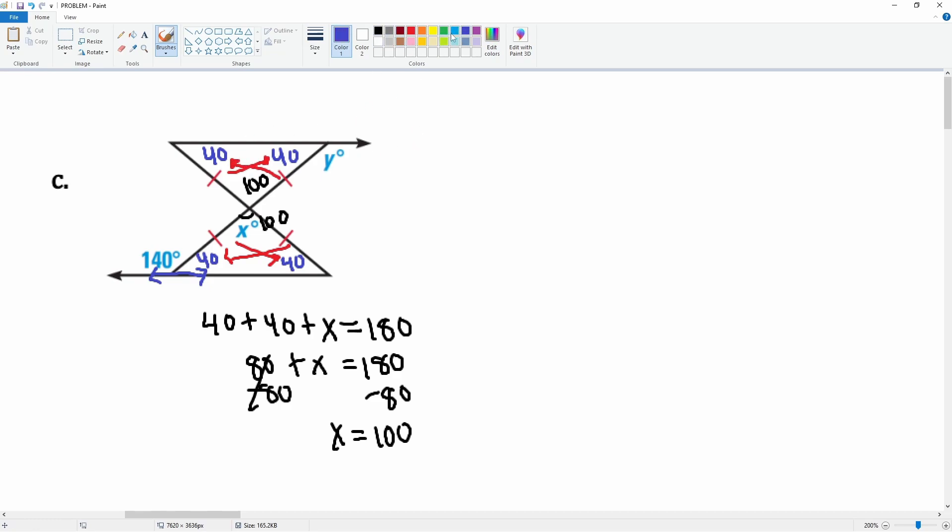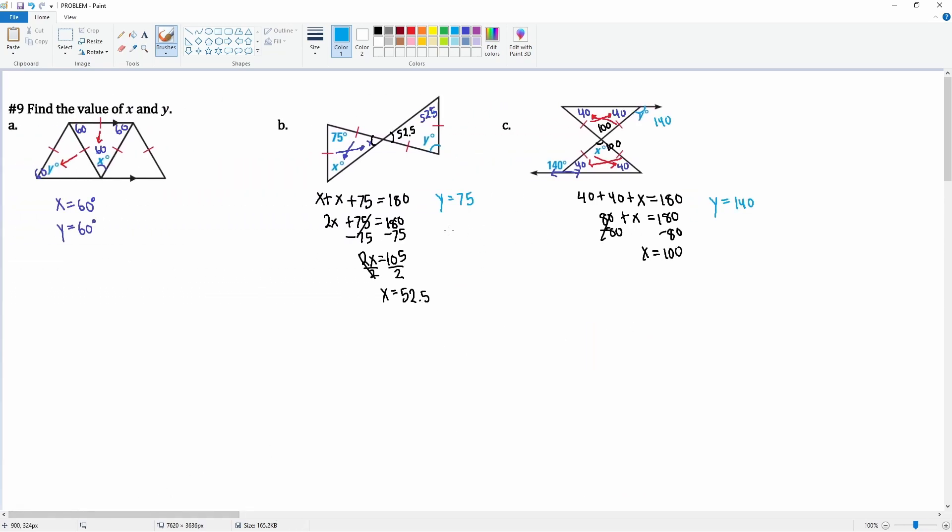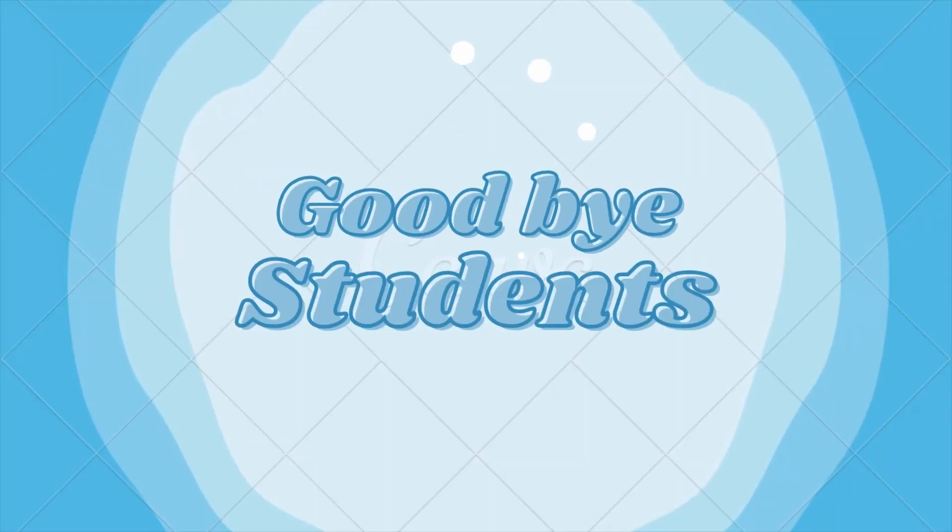If this is 40, by vertical angles this is 140 here, so we can say angle y is equal to 140 degrees. So there you go, you need to use your properties of isosceles and equilateral triangles to solve for your x's and y's here.